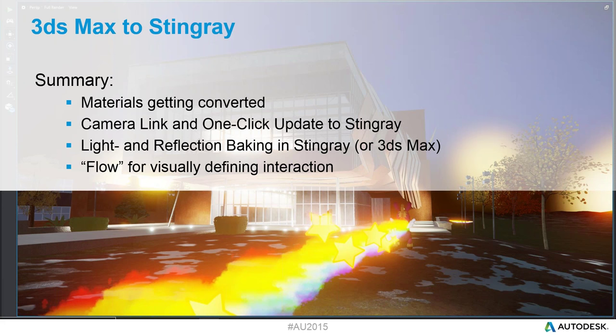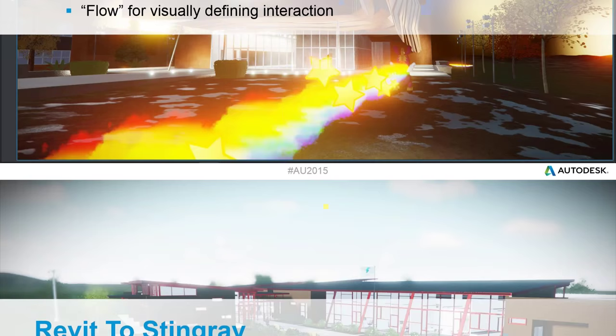To give you a quick overview of what we've seen in that specific scene: that's basically the basic conversion from 3ds Max to Stingray, where a good portion of materials — including V-Ray materials — are getting converted. You have a camera live link between 3ds Max and Stingray, including one-click update. You have light baking and reflection baking technology inside of Stingray to boost quality and performance, and the Flow tool to visually define your interactions without having to script or program.